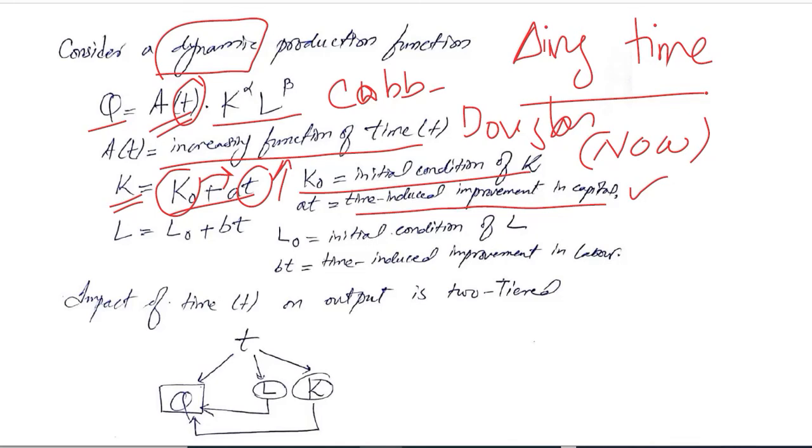Labor is also there, the initial level of labor, the initial condition of labor. And b into time, that is a coefficient which is showing the time-induced improvement in labor. So improvements can be there, qualitative or quantitative. The number of labor can increase as well as the quality of the labor, that is their experience and skill, it can also increase.